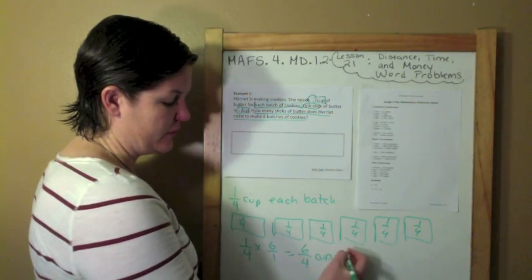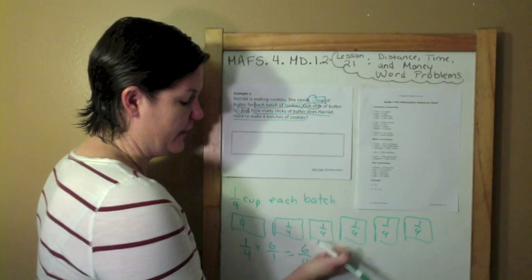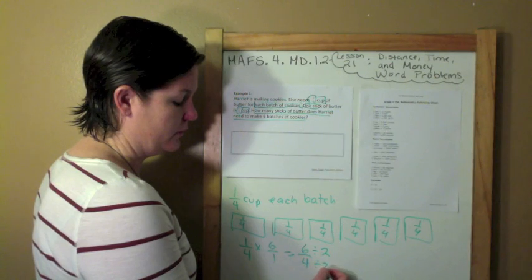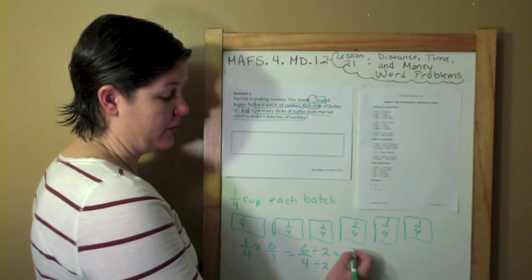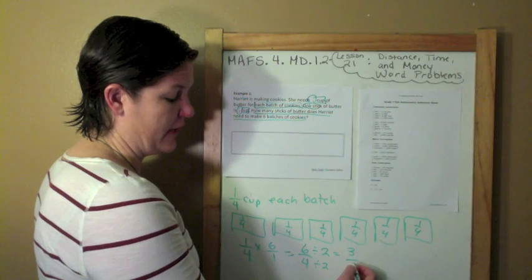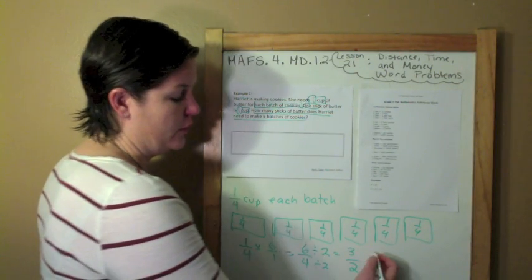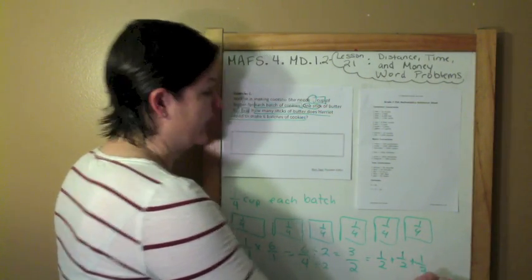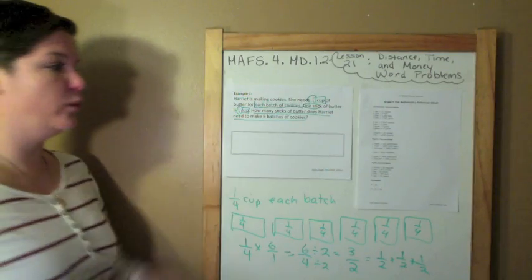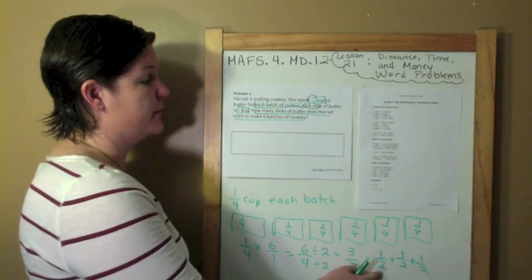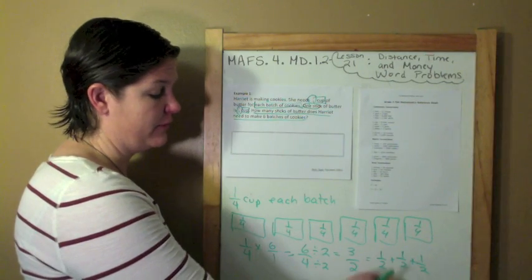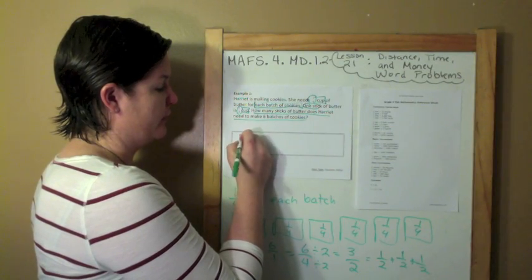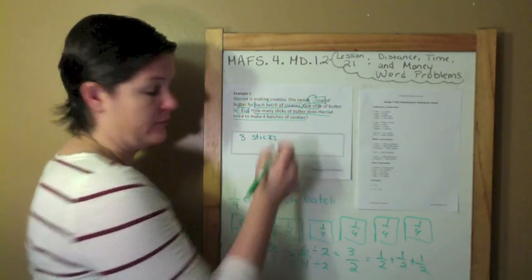Then I'm going to just convert that down to see how many halves. If I divide each by two, I'm going to get three halves, which equals one half plus one half plus one half. And it says that one stick of butter is one half cup. So how many sticks does she need? I've got three halves. So she will need three sticks of butter.